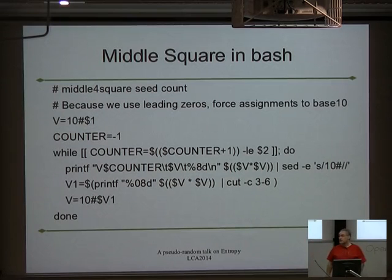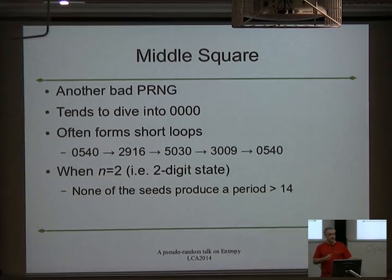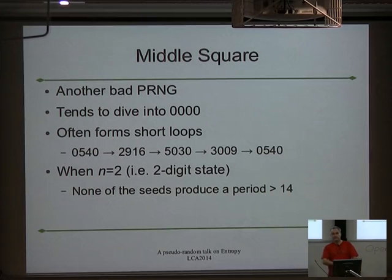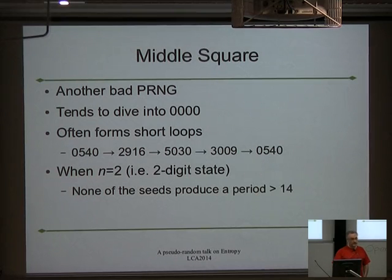The problem with the middle square process is it has quite a lot of loops. It tends to get down to zeros — if the left-hand digits of the middle four you get have zeros in them, the thing suddenly dives until it just starts producing zero forever. Zero squared is zero, pad it out to eight zeros, take the middle two zeros. With two-digit numbers, some periods just loop immediately — 0540 comes back to 0540 really quickly. You can't predict this by just looking at the algorithm. You have to play around with the outputs.